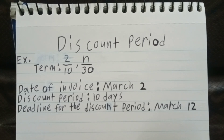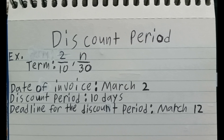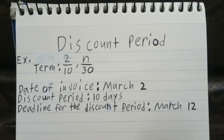This is read as 2/10 and N30, which means the buyer gets a 2% discount if he or she pays within 10 days from the invoice date. If the 10-day period has passed, the buyer will be given 30 days from the date of the invoice within which to pay his or her account without any additional charges. The 10-day period is called the discount period, and the 30-day period is called the credit period.